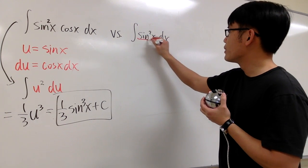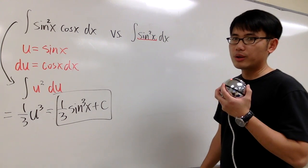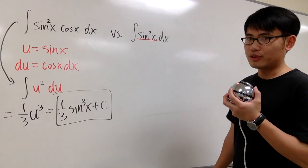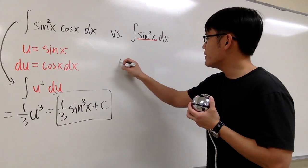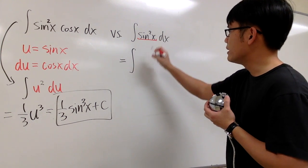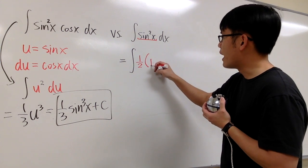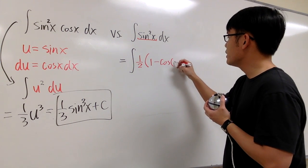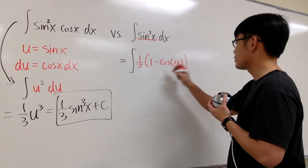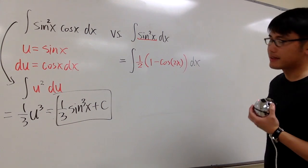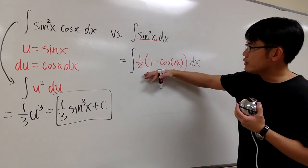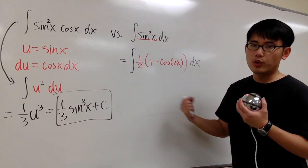The identity that we are going to use is the power reduction formula. We are going to look at sine squared x. This right here is the same as the integral of 1 half times 1 minus cosine of 2x. Not 2x to the 2x. Cosine of 2x dx. So this is just the power reduction formula for sine squared x.